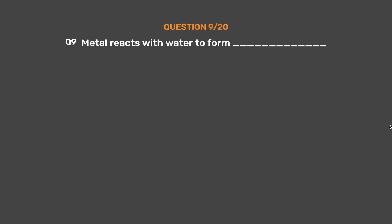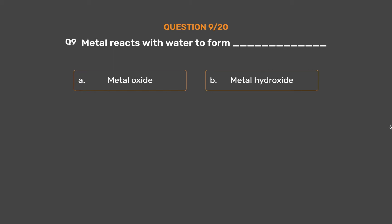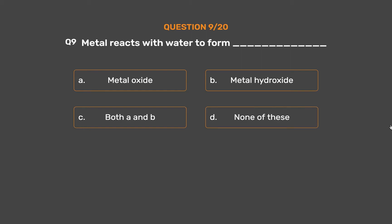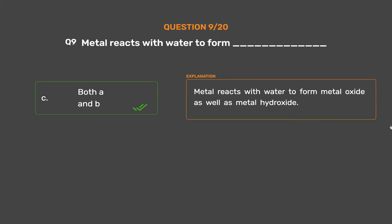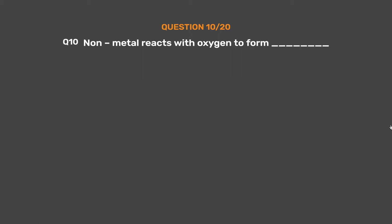Question number 9. Metal reacts with water to form ___. Option A: Metal oxide. Option B: Metal hydroxide. Option C: Both A and B. Option D: None of these. The correct answer is Option C: Both A and B. Metal reacts with water to form metal oxide as well as metal hydroxide.